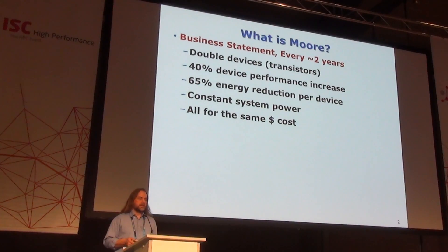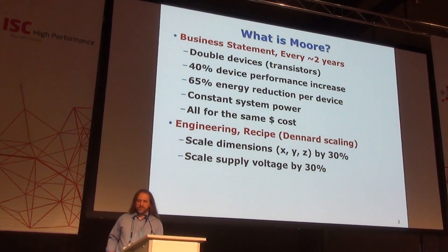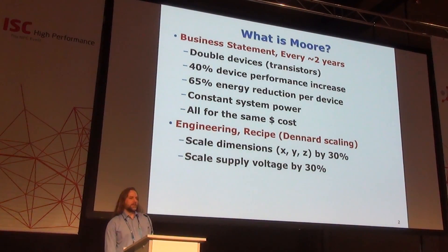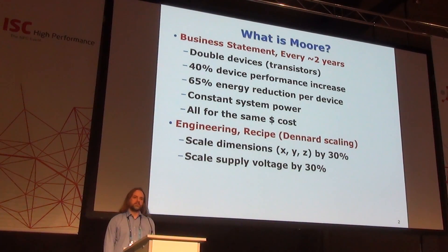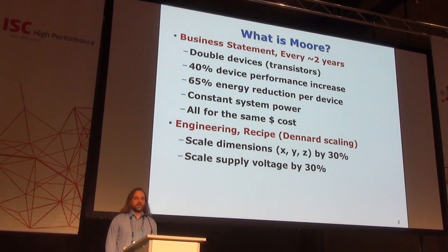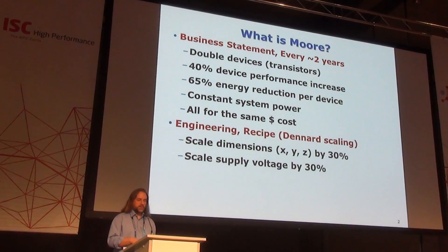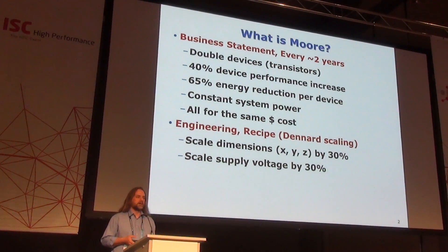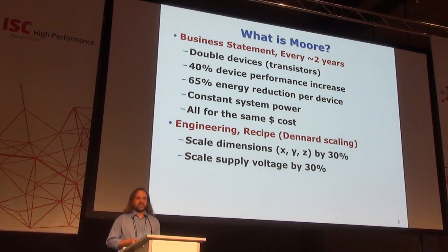Then there's the engineering side. Dennard scaling — maybe it died, maybe it didn't. But classically, the recipe for engineers to achieve Moore's Law with transistors has been: scale your dimensions, scale your supply, and you're done. You just keep turning the crank over and over again. Many years ago in the fabs, we used a handful of elements in the periodic table. Today we use almost all the elements but a handful in the periodic table to get the same job done. It's still just a recipe.